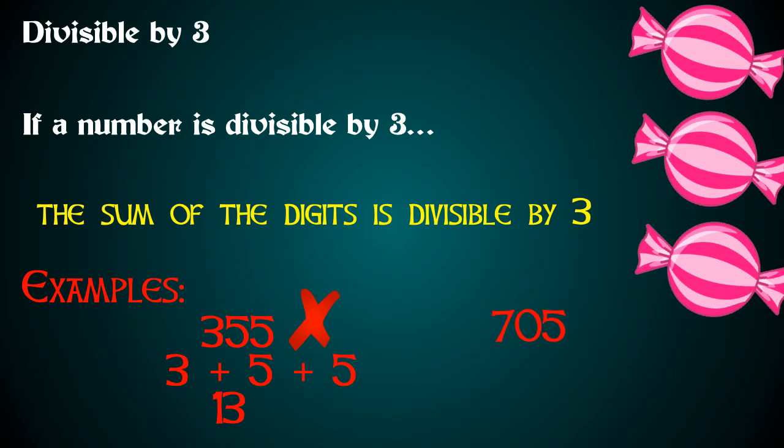What about 705? If we add up those digits, 7 plus 0 plus 5, we get 12. And 12 is divisible by 3, so 705 is divisible by 3 as well.